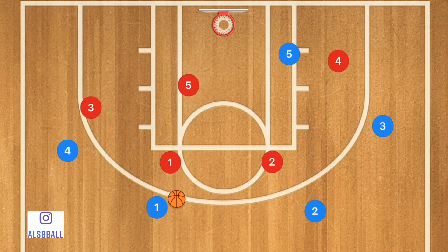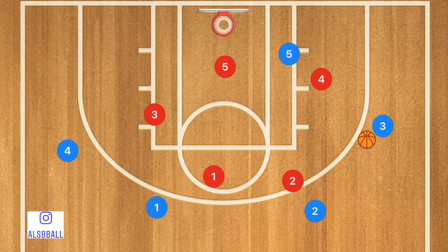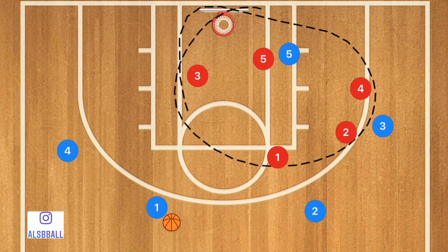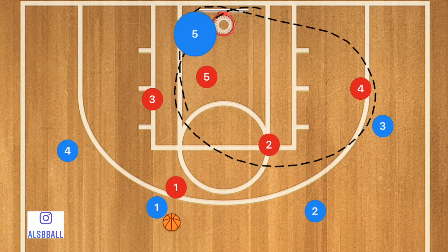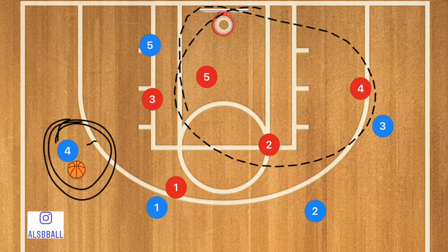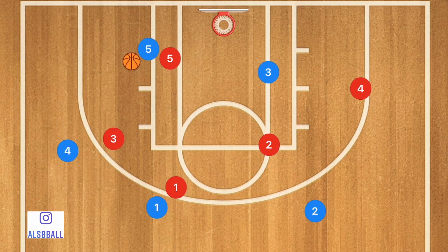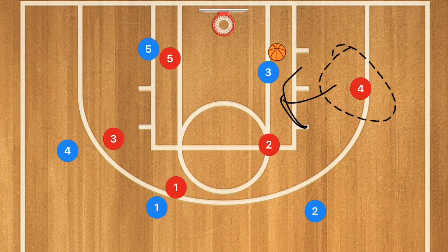One way you can beat a zone defense is by swinging the ball around the perimeter. This makes players move from side to side, and hopefully getting enough players on one side so that when you start passing the ball around they're frantically trying to find an area to guard. Sometimes that will leave a man open for a three-point shot, a mid-range shot, or even in the low post — like player three open cutting towards the rim for a layup.